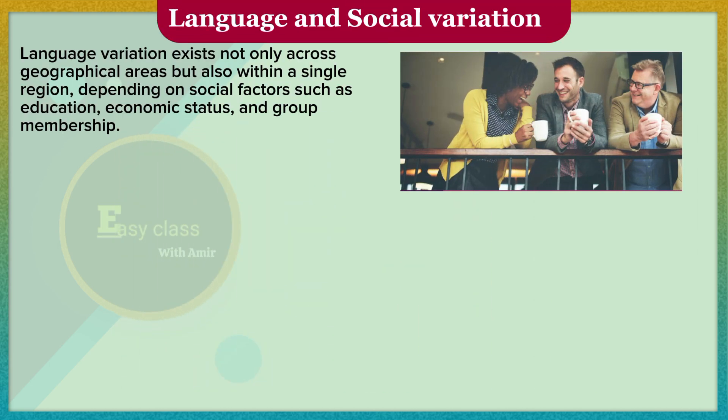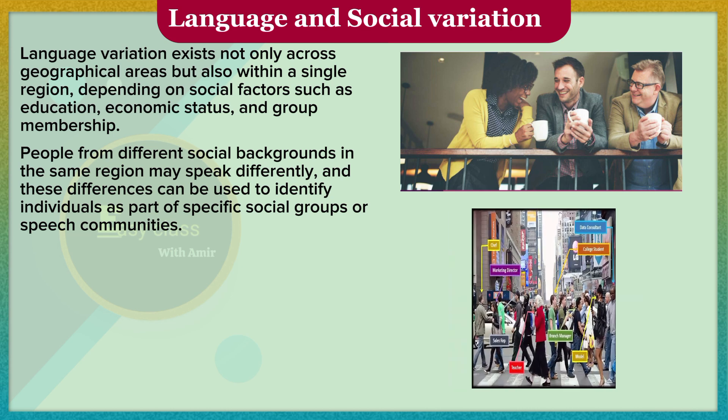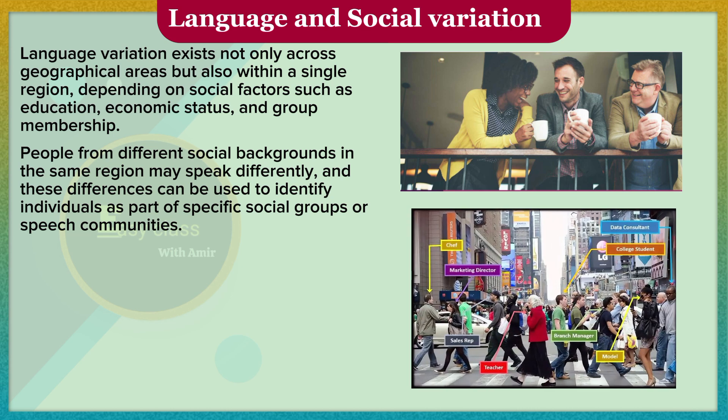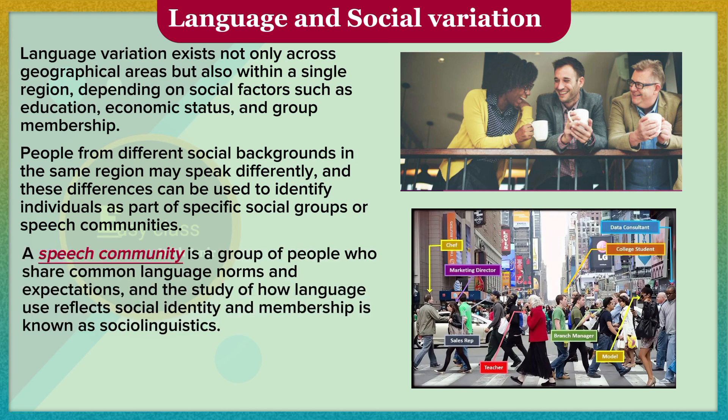Language variation exists not only across geographical areas, but also within a single region, depending on social factors such as education, economic status, and group membership. People from different social backgrounds in the same region may speak differently, and these differences can be used to identify individuals as part of specific social groups or speech communities. A speech community is a group of people who share common language norms and expectations, and the study of how language use reflects social identity and membership is known as sociolinguistics.